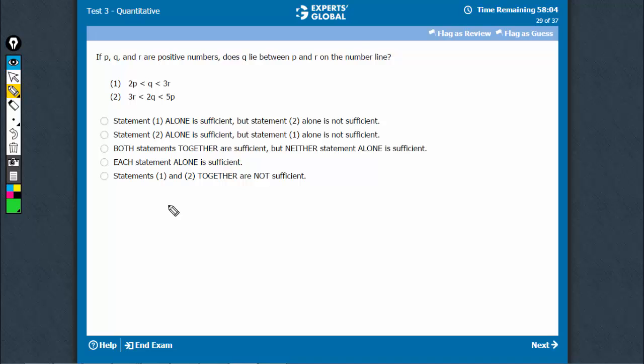So, for values such as p equals 1, q equals 3, r equals 4, this would suffice. See, 2p means 2 is less than q, which is 3, is less than 12. So, this gives me yes.